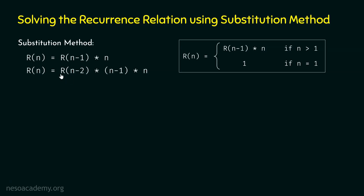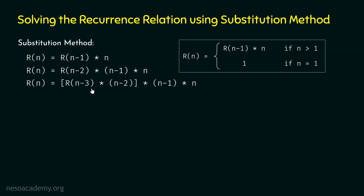This is how the substitution method works. Now, we can substitute R(n-2) by R(n-3) × (n-2). If we replace n by n minus 2, we will get R(n-2) = R(n-3) × (n-2). So, the new R(n) is R(n-3) × (n-2) × (n-1) × n. Now I have represented R(n) in terms of R(n-3).